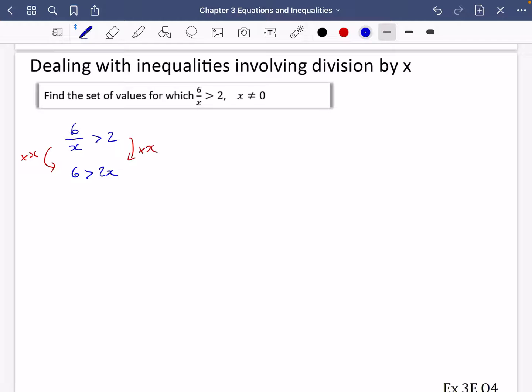Because when you are multiplying by x, like we've got in this section here and here, we could be multiplying by a negative number. And if you remember from what I said before, multiplying or dividing by a negative number will switch the direction of the inequality.